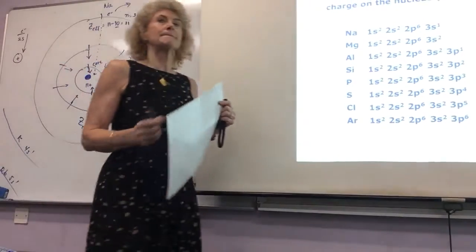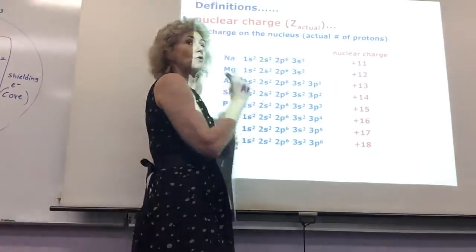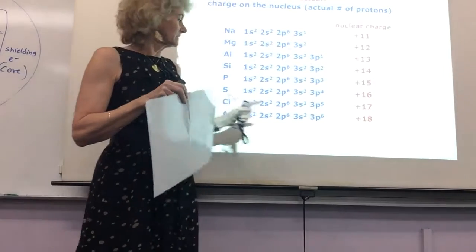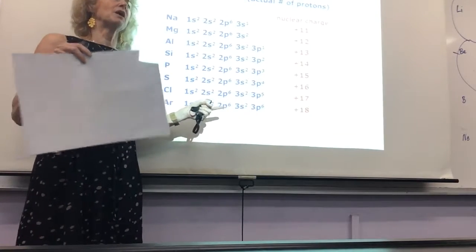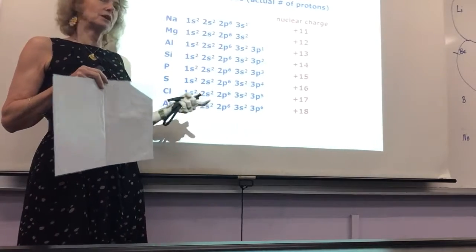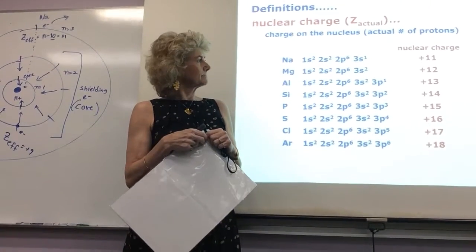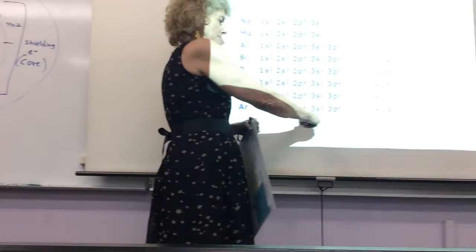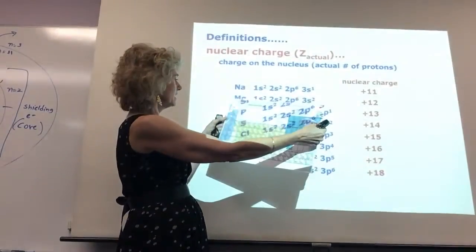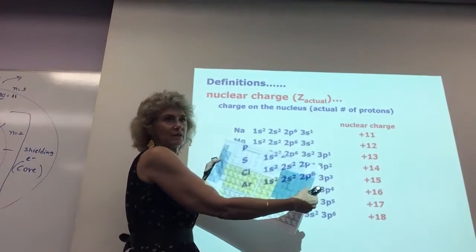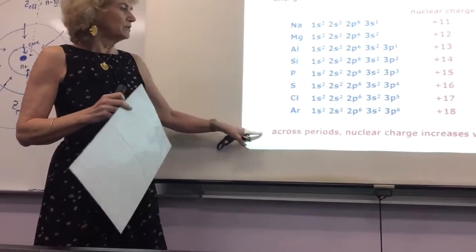Even if the 2p is full — those electrons are still valence when they're in the highest principal quantum number? No — the core is defined as everything below the highest principal quantum number. The valence is defined as the highest principal quantum number's s and p electrons — those are all valence. So as you go across the period, the core stays constant, the nuclear charge increases, and Z effective gets bigger. As you go down a group from lithium to sodium, you add more core electrons, the core gets bigger, and Z effective decreases.